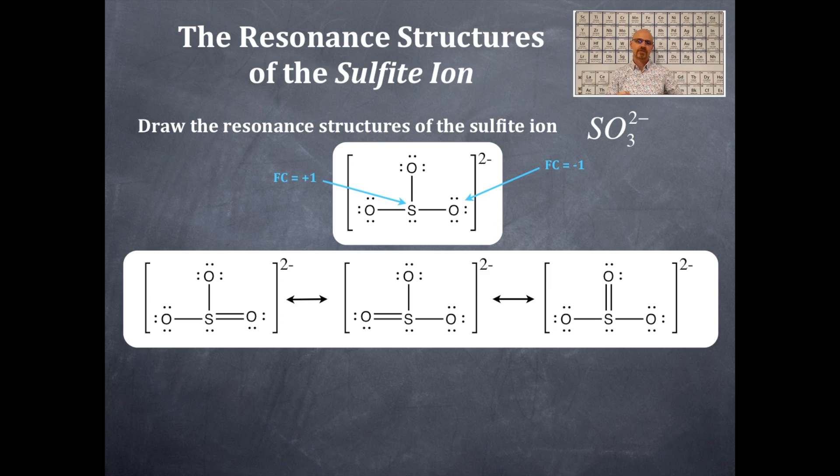Now we're going to get formal charges for all of these. That is a zero for every single of the ones that have a double bonded oxygen. The sulfur now has a zero formal charge. And each of the singly bonded oxygens has a formal charge of negative 1.